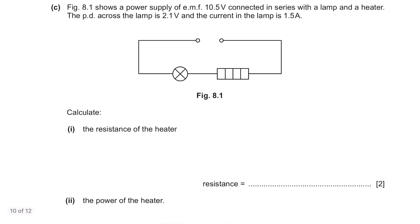Part C. Figure 8.1 shows a power supply of EMF 10.5V connected in series with a lamp and a heater. The PD across the lamp is 2.1V and the current in the lamp is 1.5A. Calculate the resistance of the heater. The current in the series circuit is the same throughout the circuit so it's also 1.5A. For PD, since the power supply was 10.5V and the lamp has a PD of 2.1V, the PD of the heater is 10.5 minus 2.1, 8.4V. Resistance equals voltage divided by current, so 8.4 divided by 1.5, 5.6 Ohms.